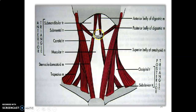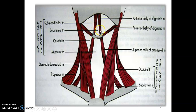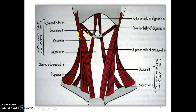Looking from the anterior aspect, the anterior median line divides into right and left. Between the two anterior bellies of the digastric muscles is the submental triangle. Between the anterior and posterior belly is the submandibular triangle. The superior belly of omohyoid divides the anterior triangle into the muscular triangle and the carotid triangle. The anterior triangle runs from the midline to the anterior border of sternocleidomastoid, containing the submental, submandibular, carotid, and muscular triangles.